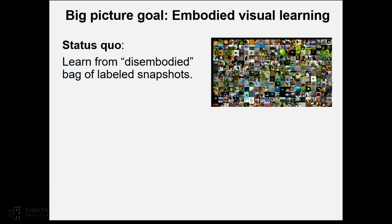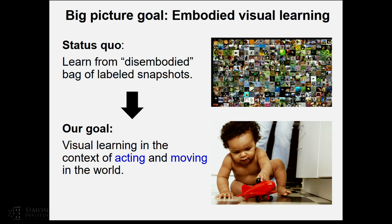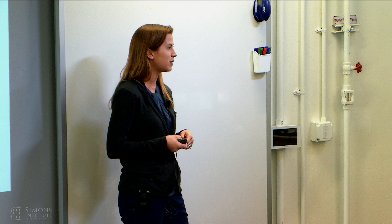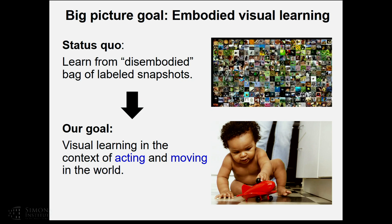That restriction is very evident in the status quo: learning from labeled examples — web photos that humans have manually tagged with their objects. These are really disembodied snapshots, moments in time in which an object, usually central in the view, has been photographed and labeled. This is restrictive if we contrast it with how visual learning takes place in nature, where we're not learning from disembodied flashcards. Instead, we're learning in loosely supervised and even unsupervised ways by acting and interacting with the environment — visual learning takes place in an embodied way.